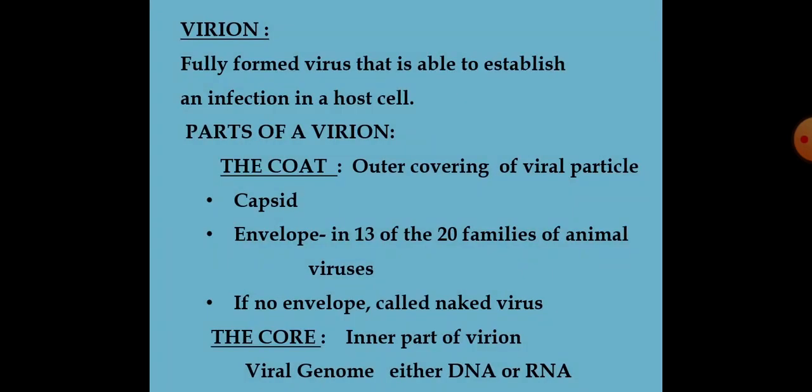A virion is a fully formed virus that is able to establish an infection in a host cell — it is a fully infectious viral particle. Parts of a virion are the coat and the core. The coat is composed of capsid and envelope. The envelope is found only in 13 out of the 20 families of animal viruses, and a virus without an envelope is called a naked virus.